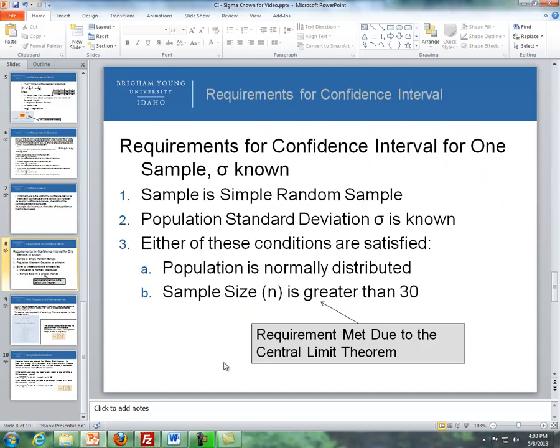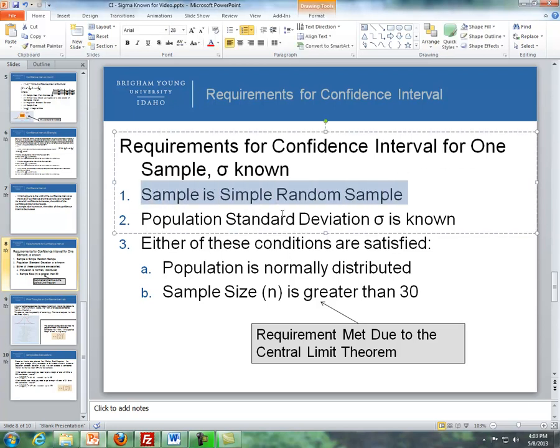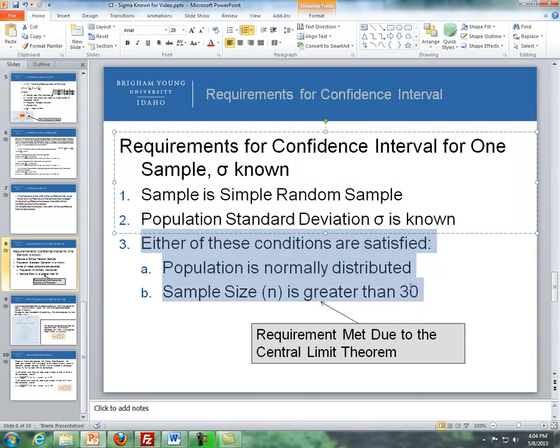The requirements for confidence intervals for one sample, sigma known, are three: the sample is a simple random sample, the population standard deviation is known, and either the population is normally distributed or the sample size is greater than 30.